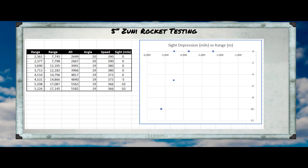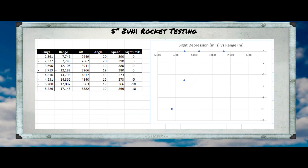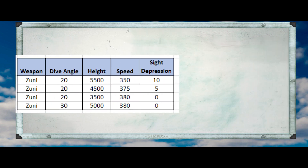I'll spare you the gory details this time and just skip to the results, which look something like this. As you can see, the basic pattern that we have been seeing is preserved. There is a flat part of the sight depression curve where we can basically aim directly at the target, and then there's a long-range tail where we need to aim off to account for the decelerating and falling rockets. Unlike FFARs though, the Zuni normal range is quite long, and even beyond this range their dispersion is quite tight. So using the data from that chart, we can create a sight depression table for the Zuni that looks something like this.